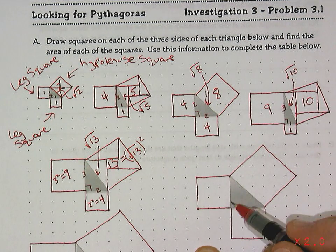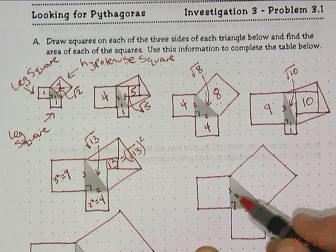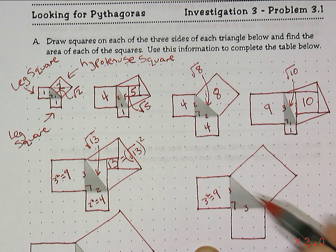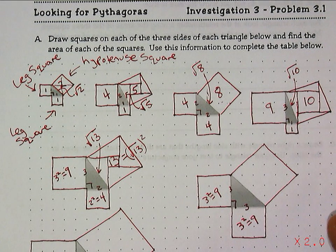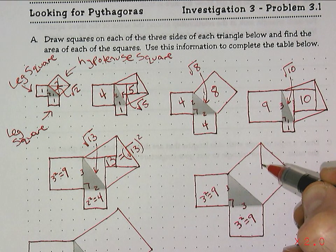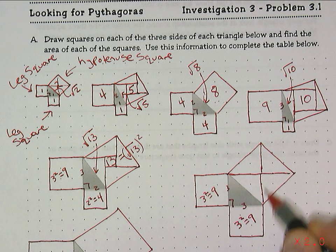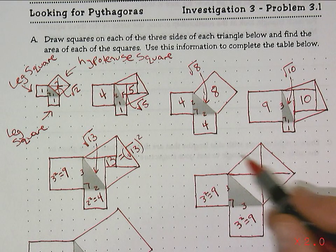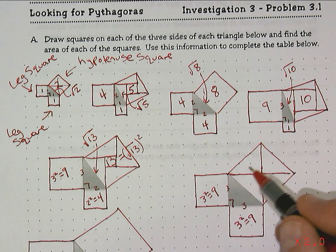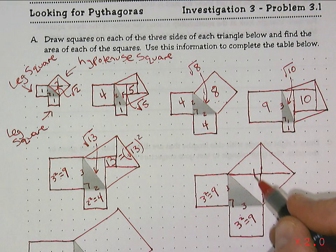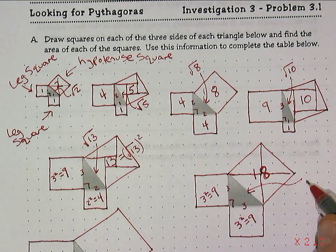Another right triangle with two leg squares: a leg that's three and a leg that's three. The area of this square is three squared, or nine. The area of this square is the same, three squared, or nine. Looking at the area of the square on the hypotenuse side, I'm cutting it into four equal pieces — each of these pieces is four and a half. So four and a half times four gives eighteen as the area of this square, which means the side length on that triangle is the square root of eighteen.